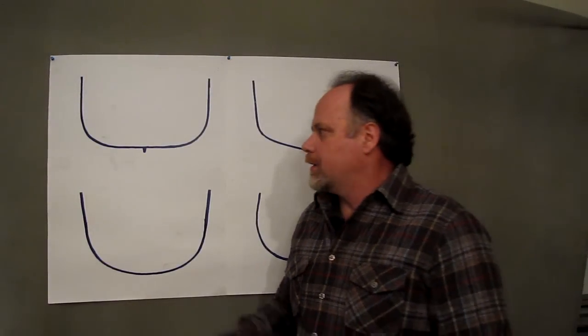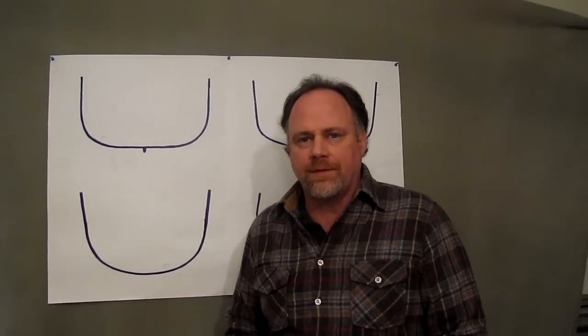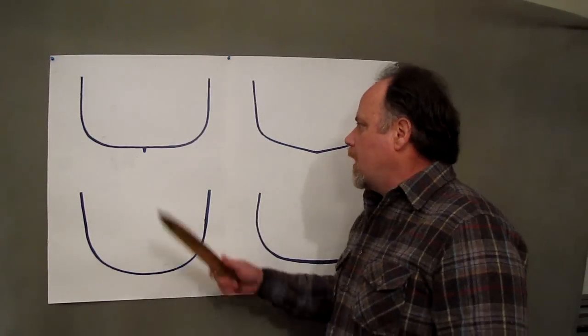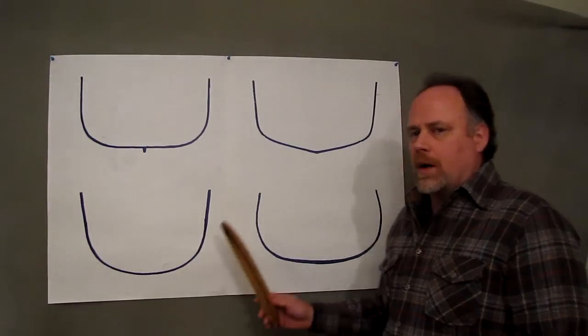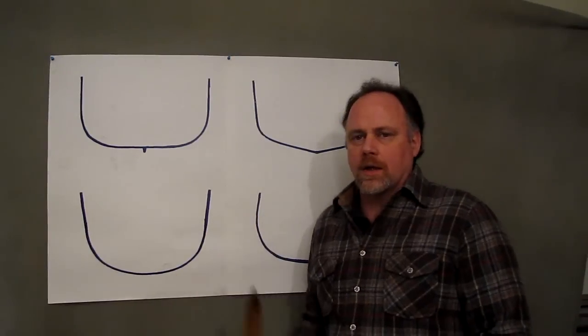Hi, Dan Moore here. We're going to continue talking about canoe hull designs in this video, where we left off in the last one, talking about the four basic hull designs: the flat bottom, the round bottom, the V bottom, and the shallow arch in cross section.